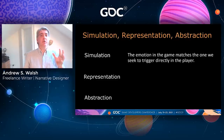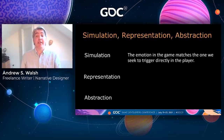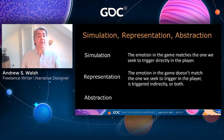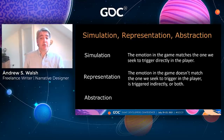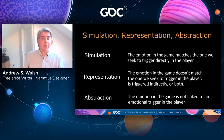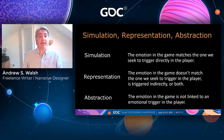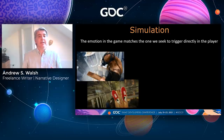For a simulation, the emotion in the game matches the one we seek to trigger directly in the player — we want the player to feel exactly what's in the game. For a representation, the emotion doesn't match the one we seek to trigger; it's triggered indirectly, and we put some distance between the emotion in the game and the player's emotion, requiring the player to interpret what we've given them. In an abstraction, we present emotions only as a concept — we don't intend the player to have an emotional reaction at this point.